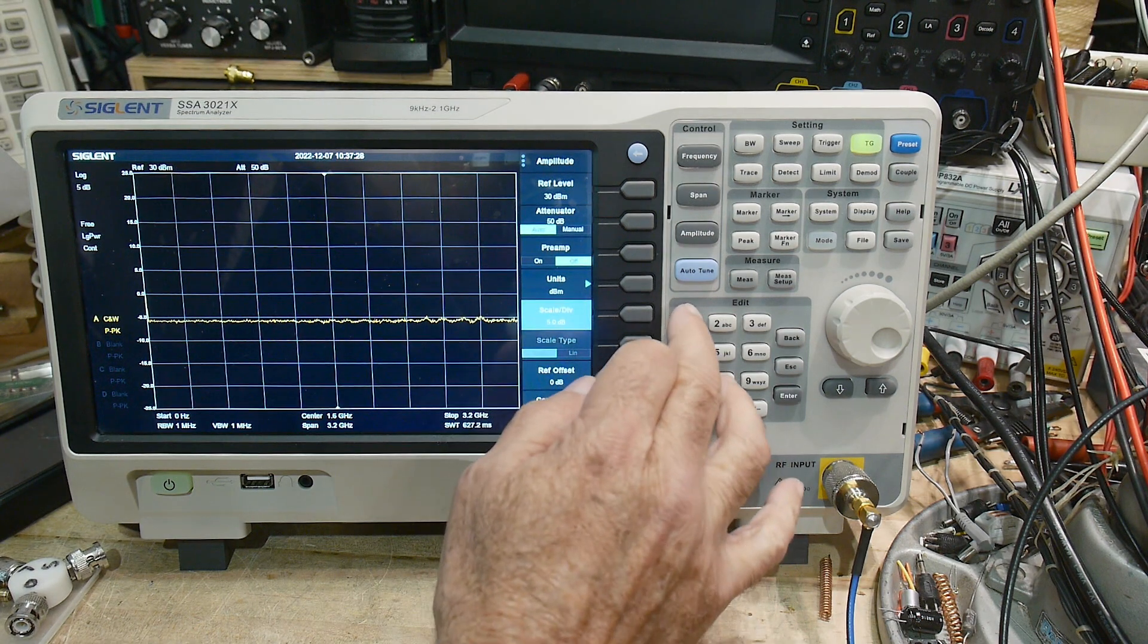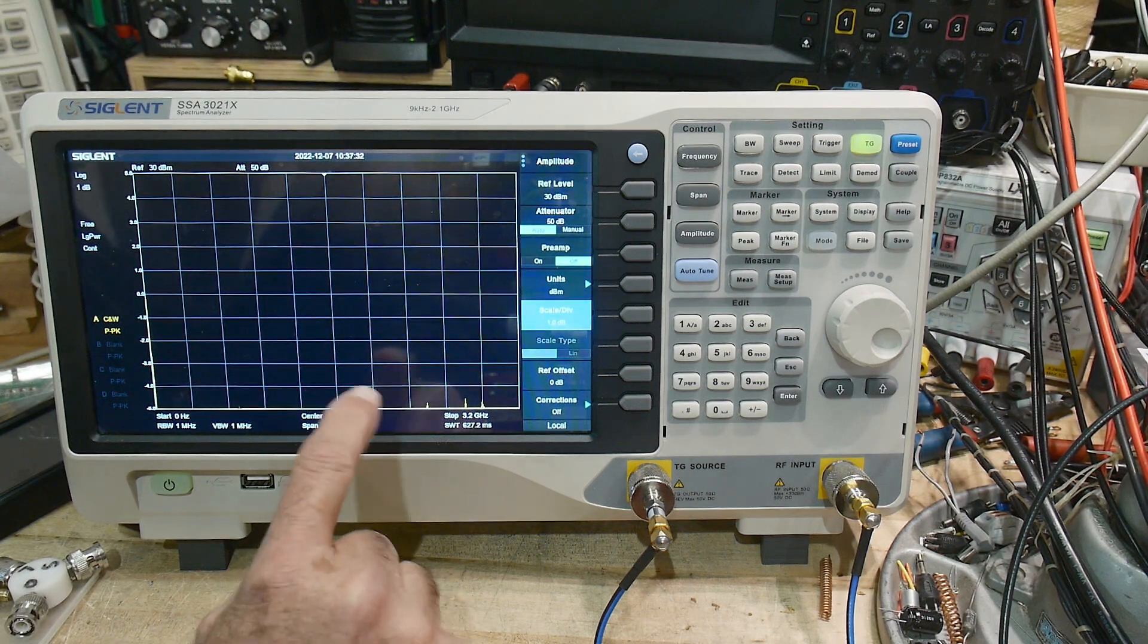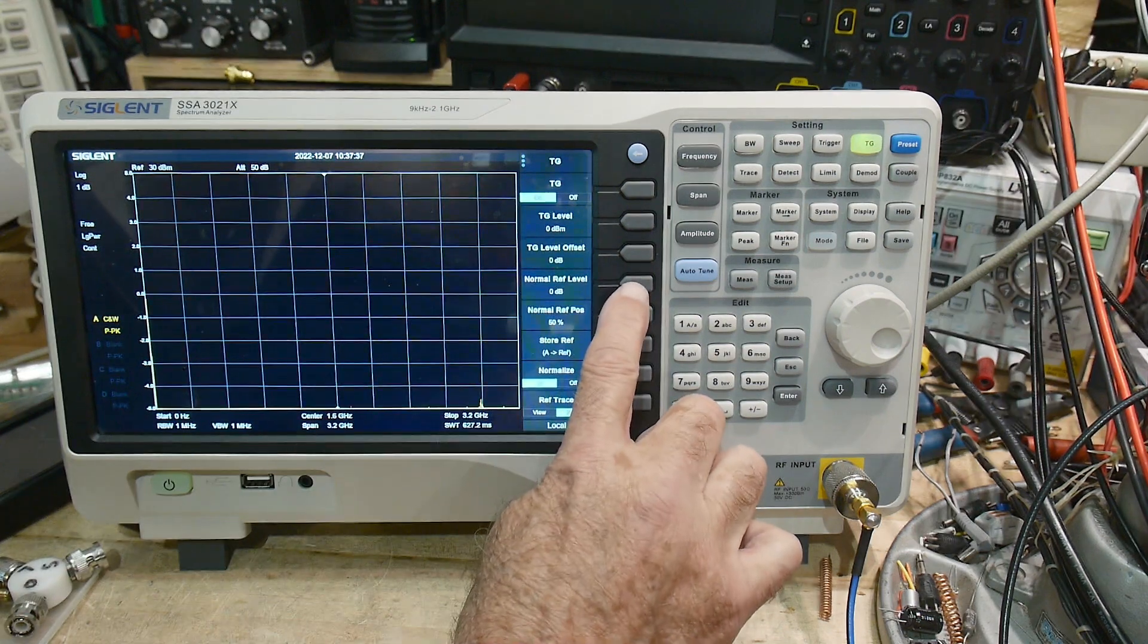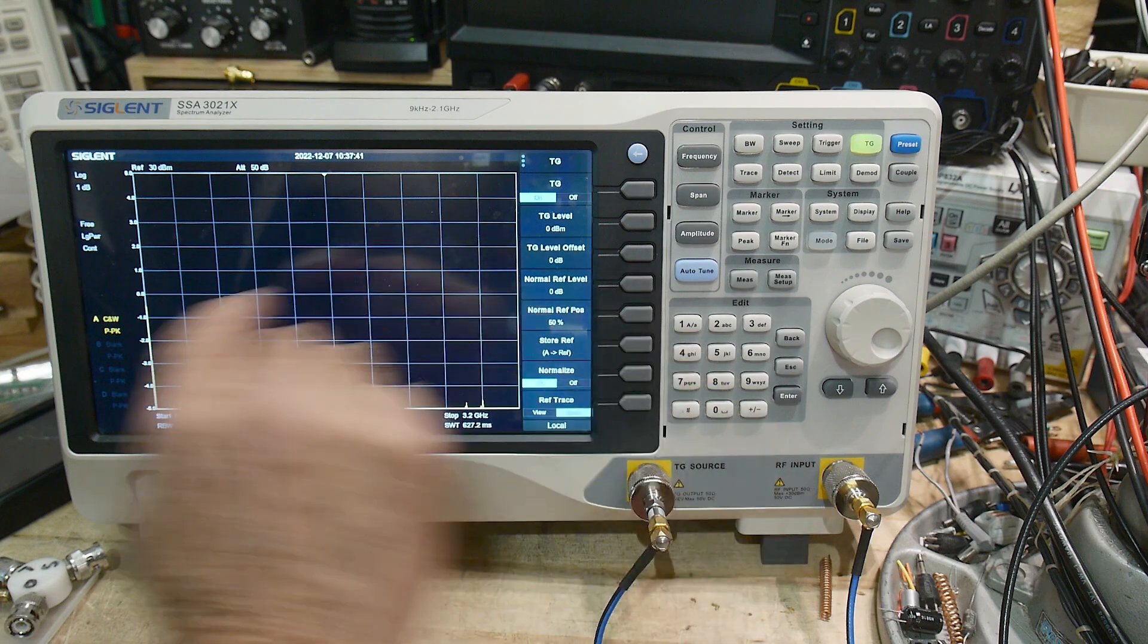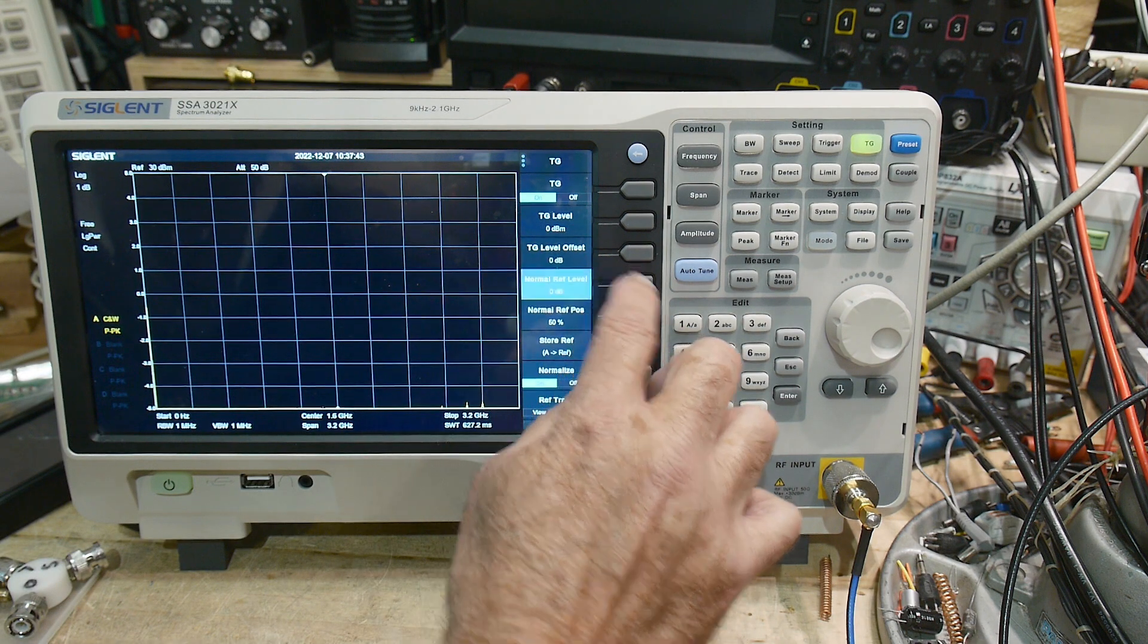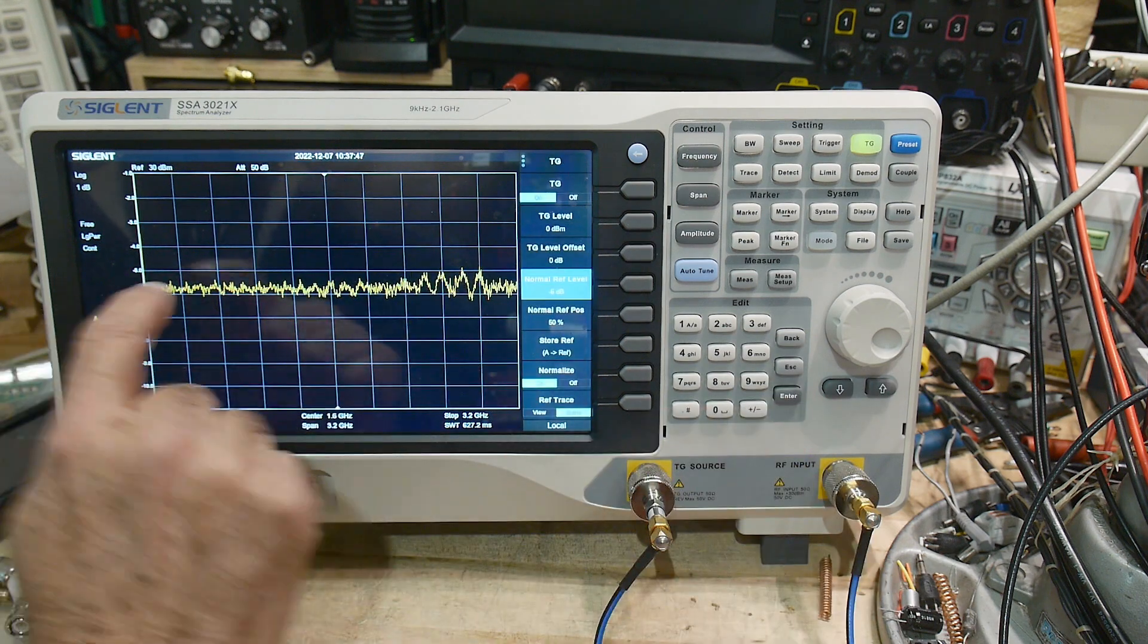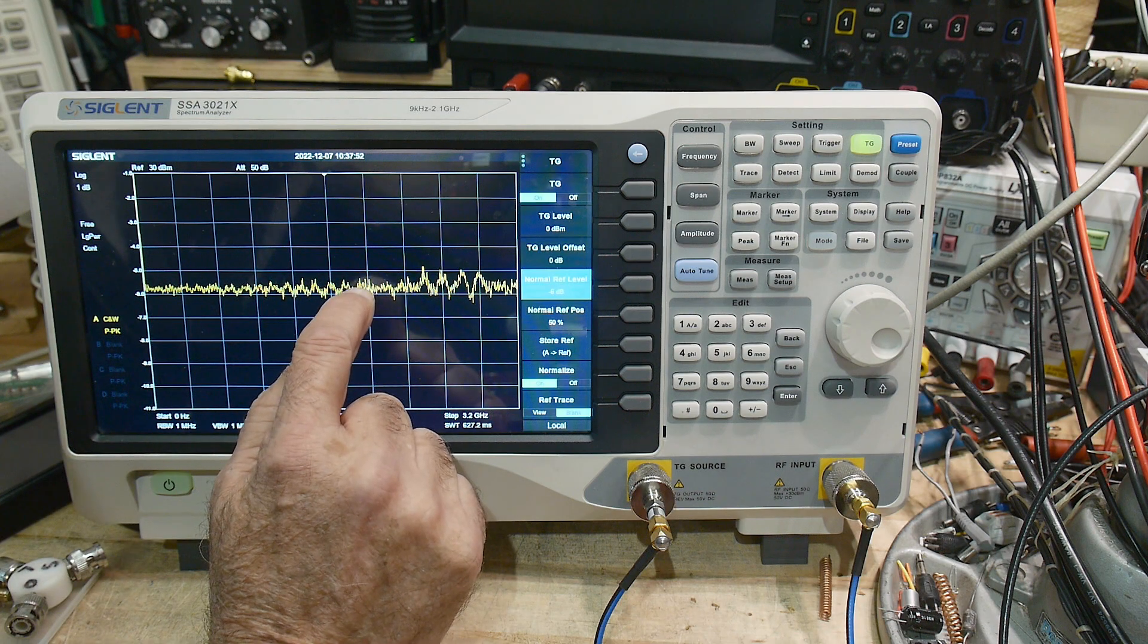Oops, it fell off the bottom. So how can we get it back up? Well, if we go back to that tracking generator, when we do this normalization, we can say we want to set the center point to minus 6. Now minus 6 will be right here at the 50% level, and that's what this is.